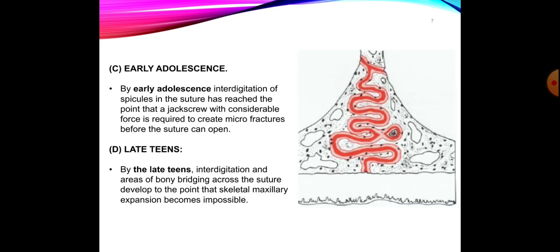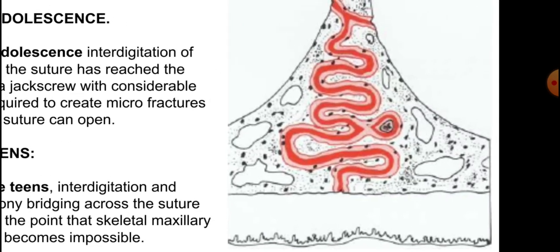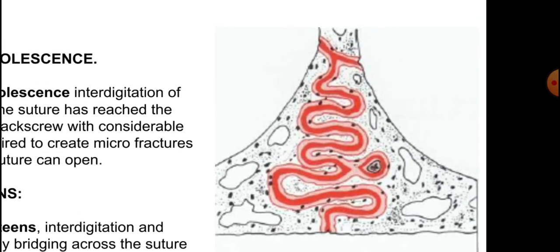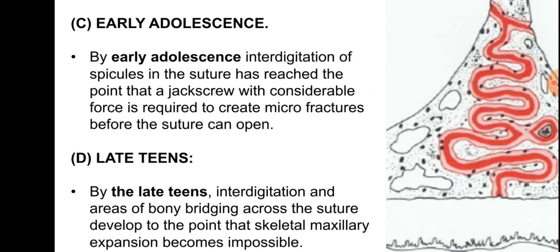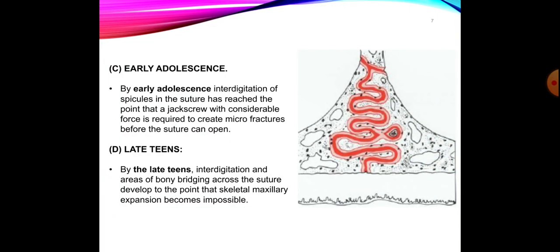This picture depicts the suture at early adolescence. Here we can see that there is more interdigitation of the suture, and the spicules in the sutures have reached a point that heavy forces will be required to break these interdigitations. Therefore in early adolescence, heavy forces are required to break the interdigitations, and a heavy force with a jack screw is especially required for expansion.